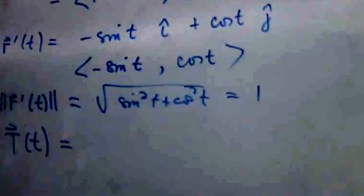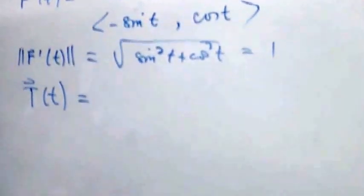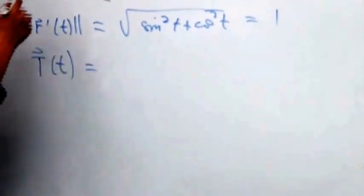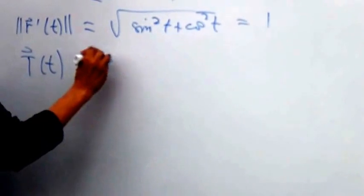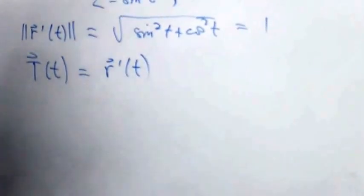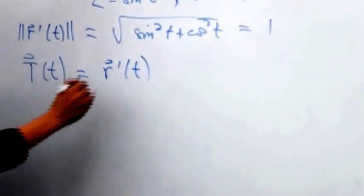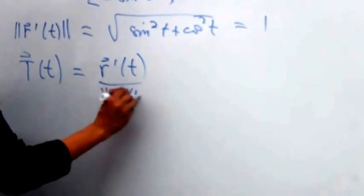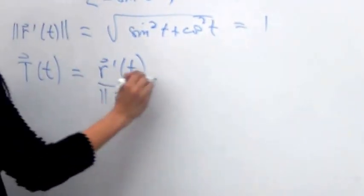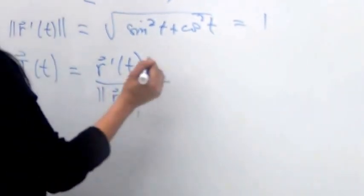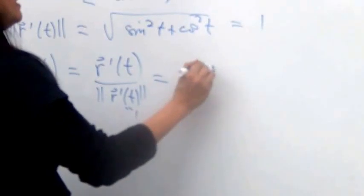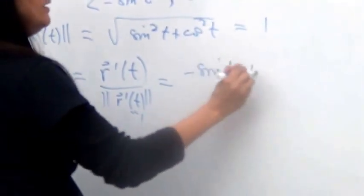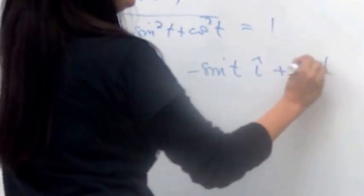The good news is that the unit tangent vector T of t is really the same as the derivative vector R prime in this example, because you didn't have to divide — the magnitude is one. So T of t is negative sine t i plus cosine t j.